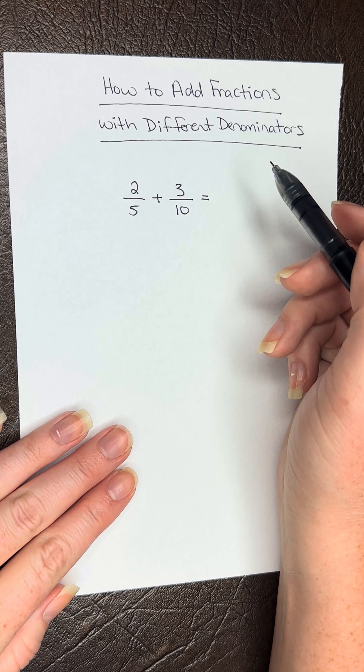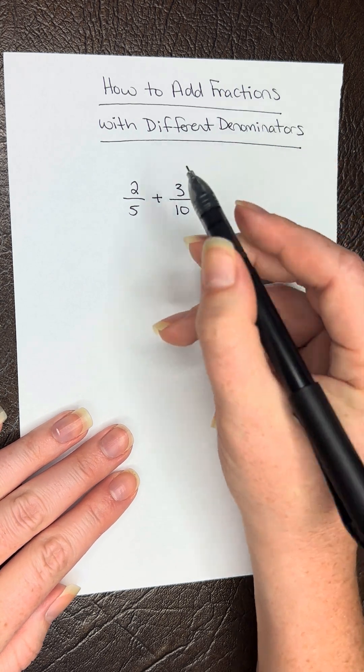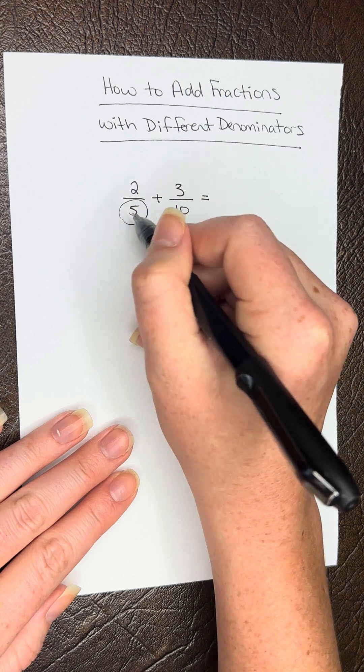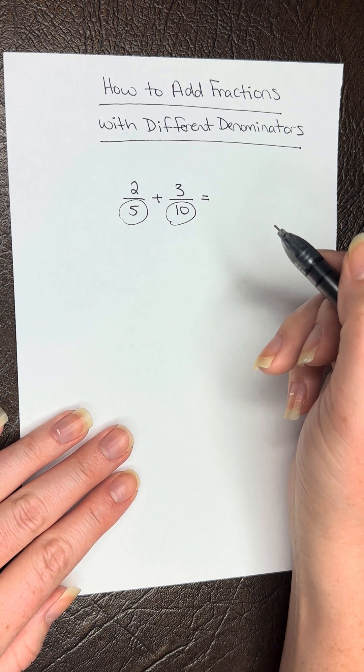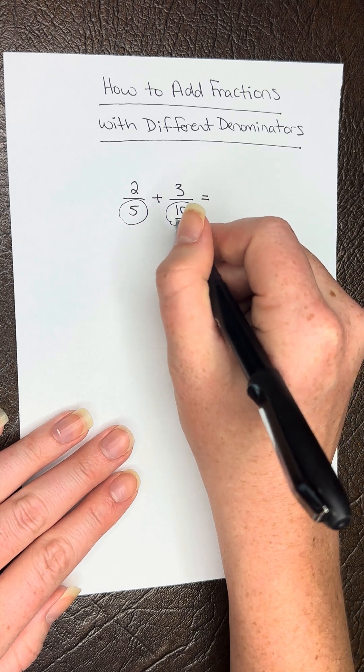We need to find a common denominator. We have two denominators here: 5 and 10. The least common denominator is going to be 10.